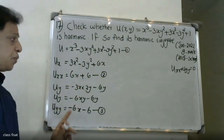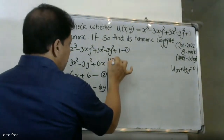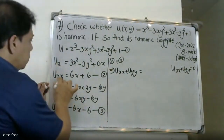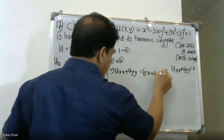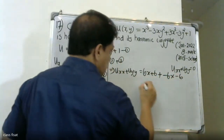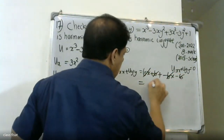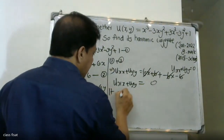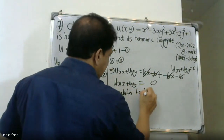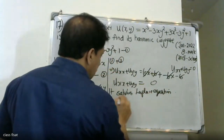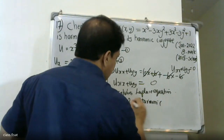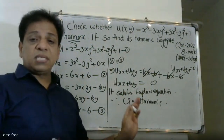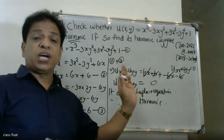Now uxx plus uyy equals (6x plus 6) plus (minus 6x minus 6), which equals zero. Therefore it satisfies Laplace's equation. Therefore u is harmonic.